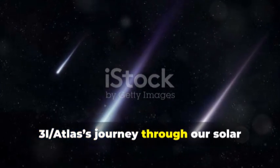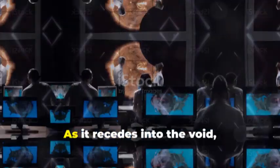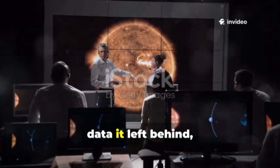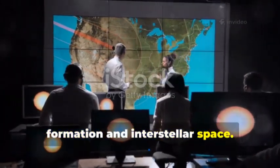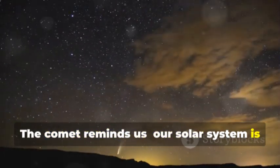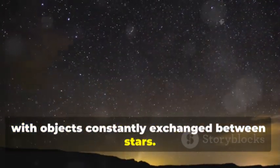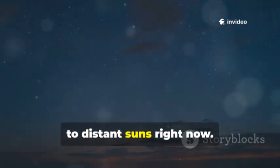3i-Atlas's journey through our solar system is brief, but its impact will last for decades. As it recedes into the void, scientists will analyze the mountains of data it left behind, unlocking new insights about planet formation and interstellar space. The comet reminds us our solar system is part of a galactic ecosystem, with objects constantly exchanged between stars. Somewhere, pieces of our own system may be traveling to distant suns right now.